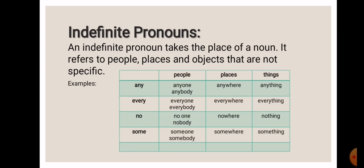Similarly, if the pronoun ends with W-H-E-R-E, it's used to refer to places. For example, anywhere, everywhere, nowhere, somewhere. And see, none of these are specific. They are not telling you specific places.